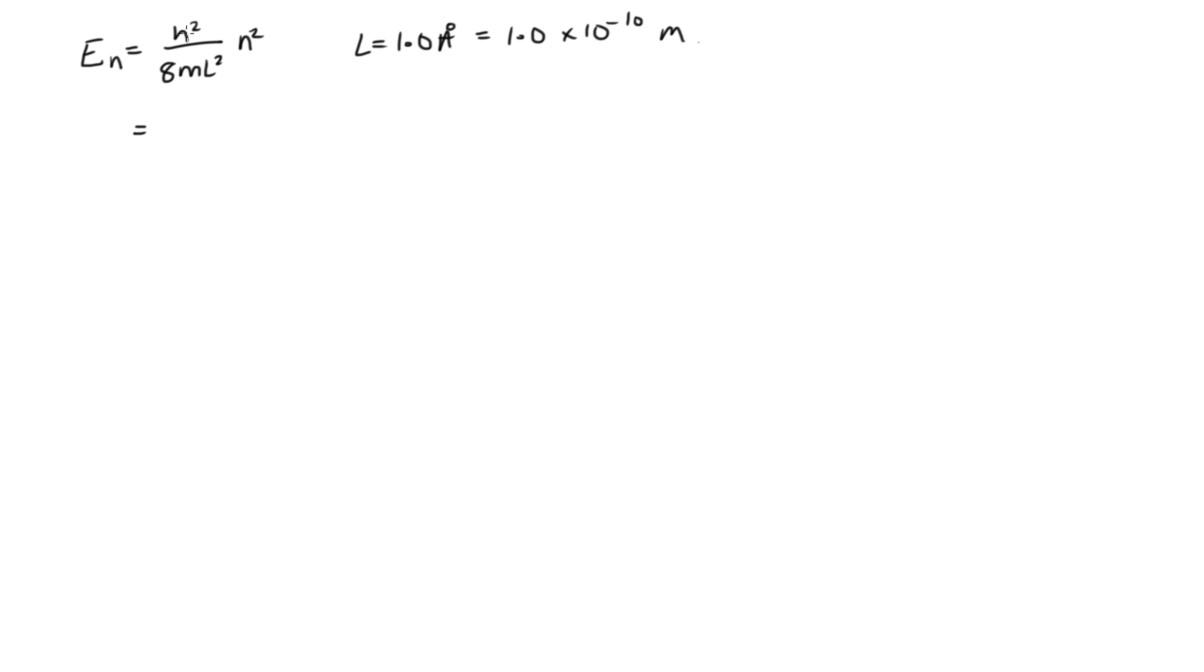Let's start by substituting in. We've got h squared, that's 6.626 times 10 to the minus 34 squared, over 8 times the mass. In this case, it's an electron which is trapped, so this is the mass of the electron, 9.109 times 10 to the minus 31 kilograms, times l squared, which is 1.0 times 10 to the minus 10 squared.